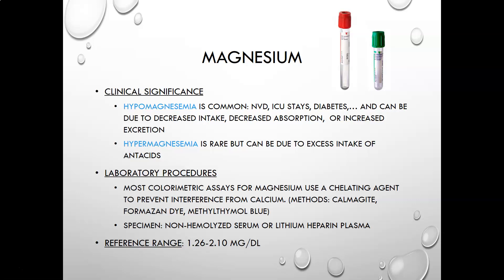Hypermagnesemia, or high magnesium levels, is rare, but could be due to excess intake of antacids or a medication error where too much was given intravenously. For the laboratory procedure, most colorimetric assays for magnesium use chelating agents to prevent interference from calcium. The methods are calmagite, formazin dye, and methylthymol blue. The specimen is non-hemolyzed serum or lithium heparin plasma. The reference range is 1.26 to 2.10 mg/dL — very low levels, because magnesium is primarily inside cells, not in the blood.